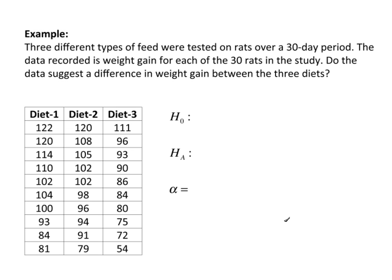Now that we've talked about the basic idea behind ANOVA, let's go through a quick example. We have three different types of feed that were tested on rats over a 30-day period. The data recorded is the weight gain for each of the 30 rats in the study, and the data suggests a difference in weight gain between the three diets.